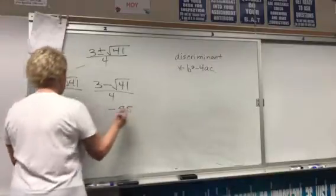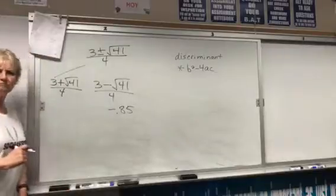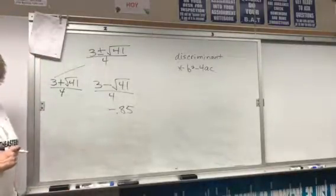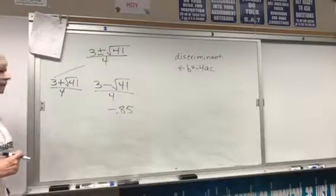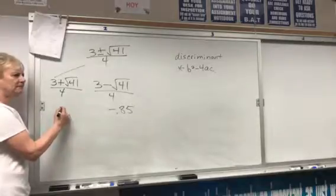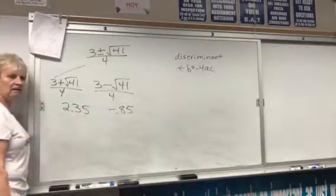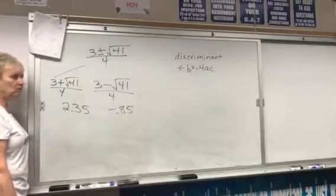How about this one? 0.85? No. It can't be the same. It can't be just the opposite. 2.35. Positive 2.35. Anybody concur? Is that right? No? I don't concur.